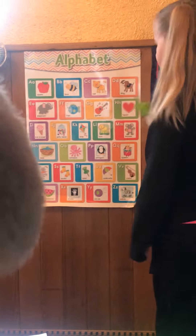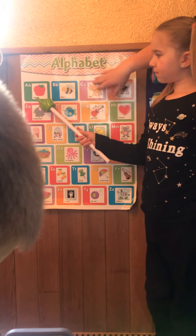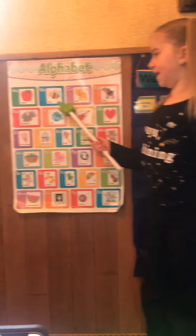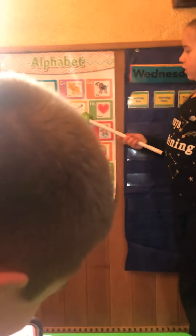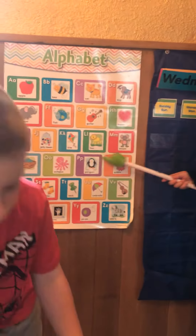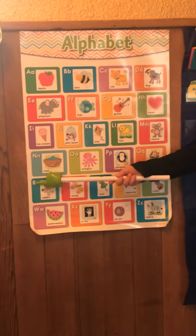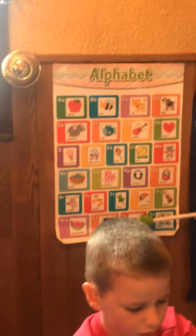Holly, would you like to lead us in our alphabet? Friends at home, please follow the green finger and say your ABCs with me. A, B, C, D, E, F, G, H, I, J, K, L, M, N, O, P, Q, R, S, T, U, V, W, X, Y, Z.